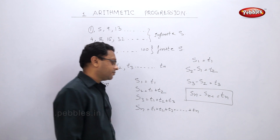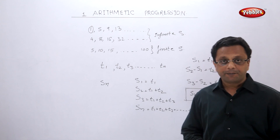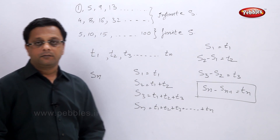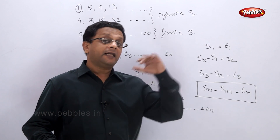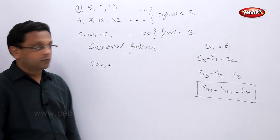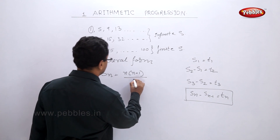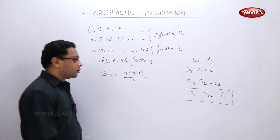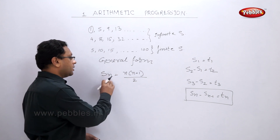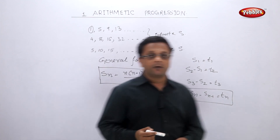Just remember this formula — we may have to use it somewhere. If Sn minus Sn-1 equals Tn, we can easily find the nth term of a sequence when sums are given. As a general form, Sn equals n(n+1)/2. Please note down these two formulas: first, Tn = Sn - Sn-1; and second, as a general form, Sn = n(n+1)/2.